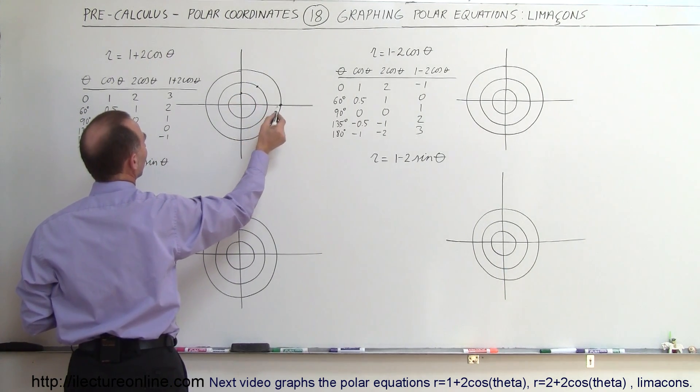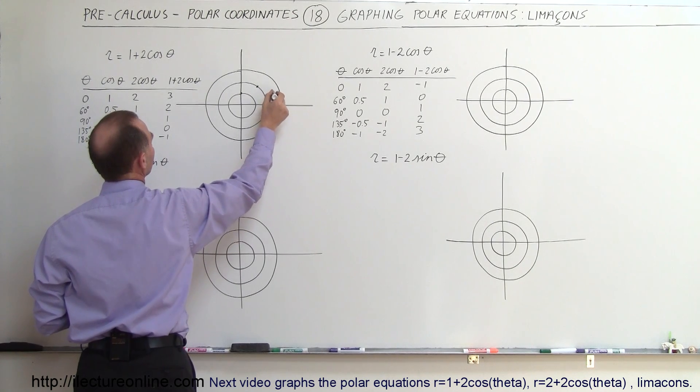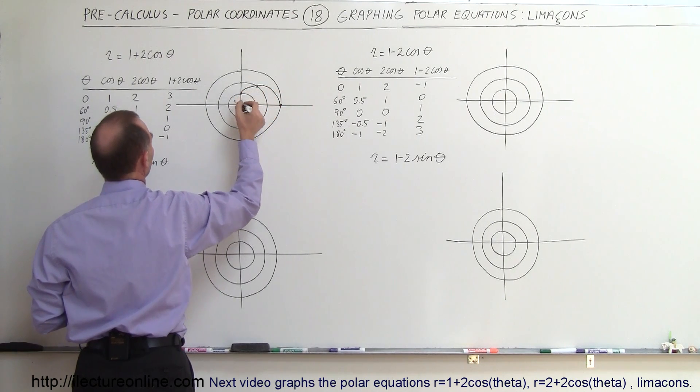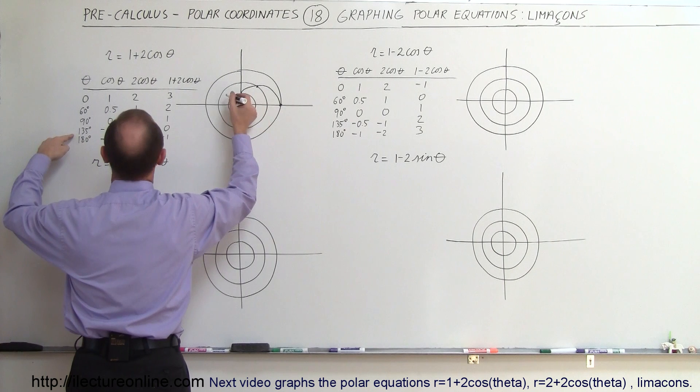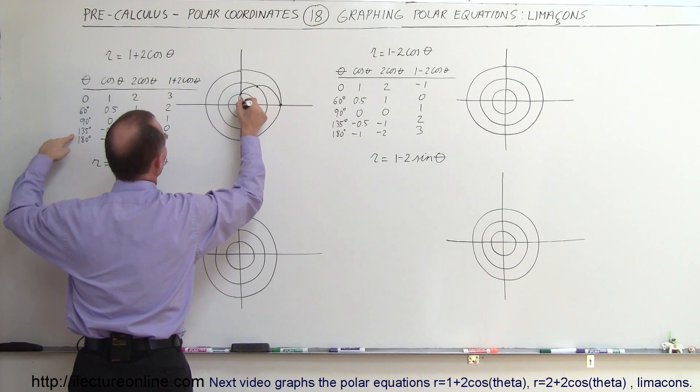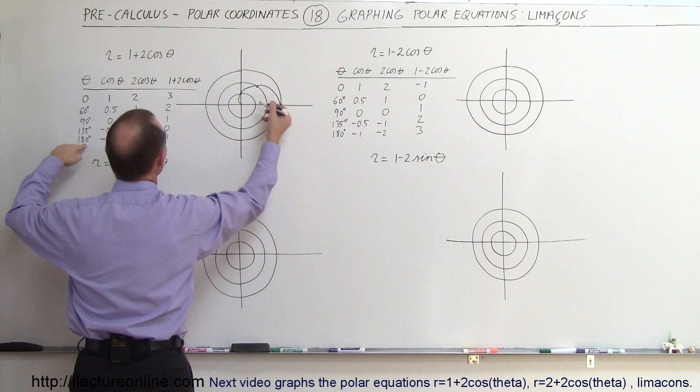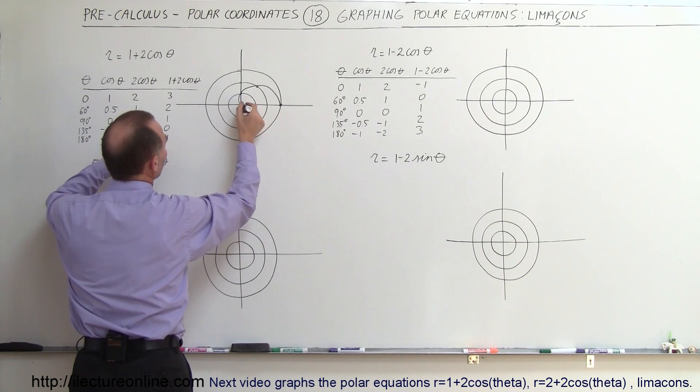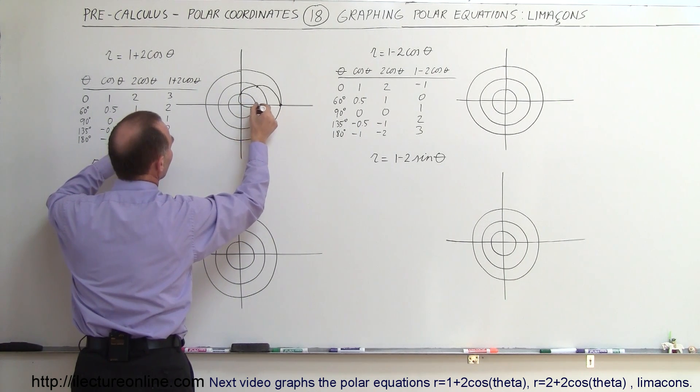So we go all the way around like this, and then we can see that 135 degrees, it would be equal to 0. That would be coming around this way, and then finally at 180 degrees, pointing this way, it's minus 1, which means that it comes around like this.